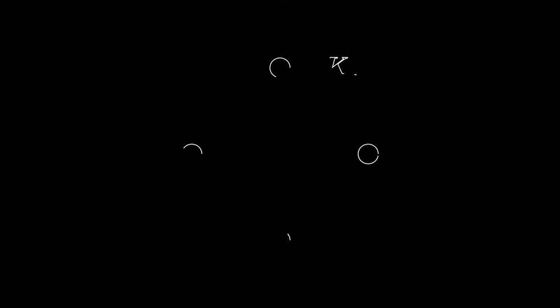A complete graph on n vertices denoted Kn is a graph where each pair of vertices is connected by an edge.